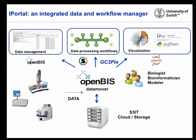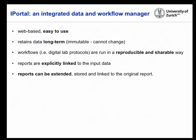These are the four components of iPortal. Graphically: OpenBIS data mover pulls data from machinery — microscopy, mass spectrometers, or NGS — puts it on storage, and makes it available for biologists, bioinformaticians, and modelers for data management, processing, and visualization. This is a simplified view of the whole platform.